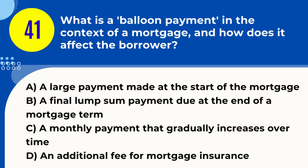Question 41. What is a balloon payment in the context of a mortgage and how does it affect the borrower? A. A large payment made at the start of the mortgage. B. A final lump sum payment due at the end of a mortgage term. C. A monthly payment that gradually increases over time. D. An additional fee for mortgage insurance. Answer: B. Explanation. A balloon payment in a mortgage context is a large lump sum payment due at the end of a mortgage term. It usually comes after a series of smaller monthly payments and may require refinancing or selling the property if the borrower cannot make the large payment.